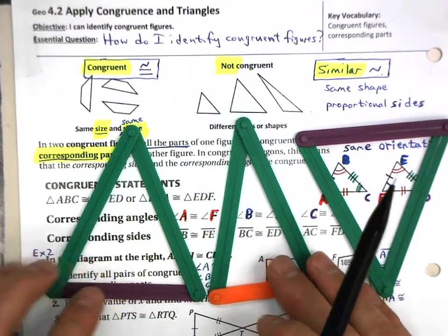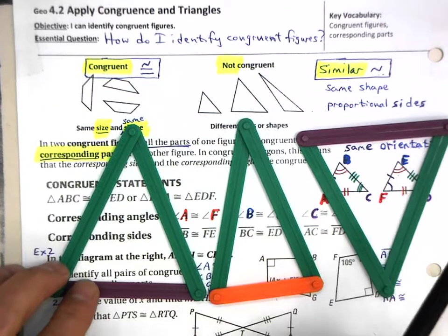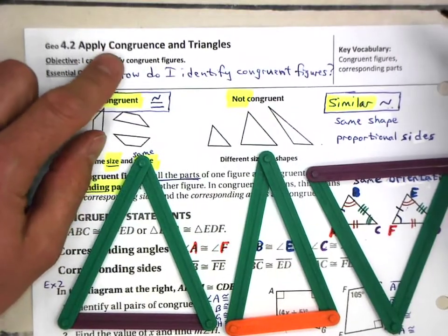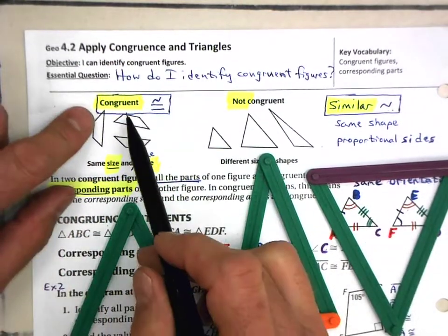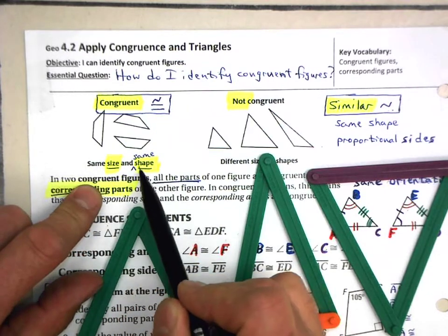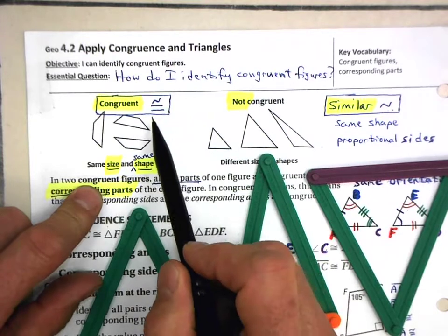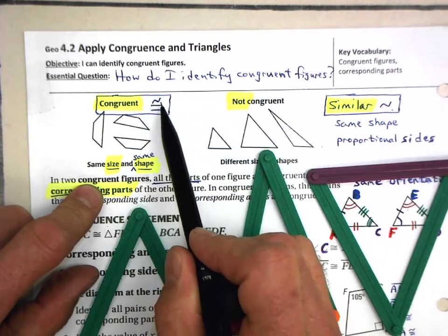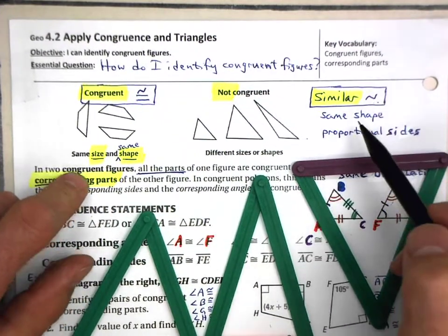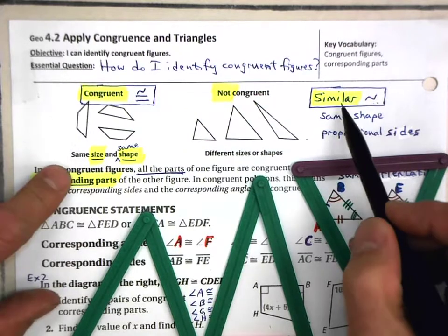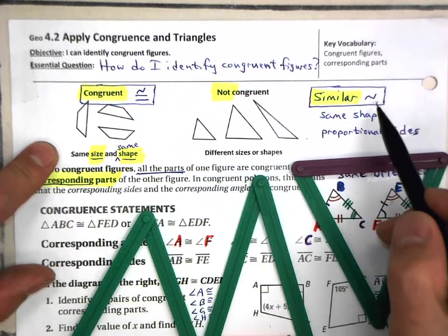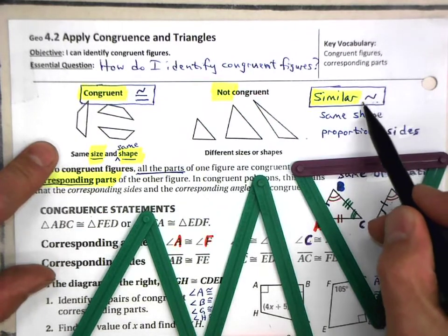We're able to do some different kinds of triangles here. You will remember that congruence means same shape and same size. The symbol we use is an equal sign with a squiggle on top. In contrast, two shapes that are similar use just one squiggle as a symbol.